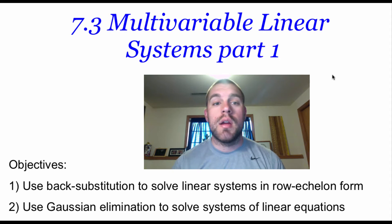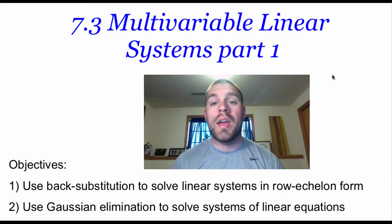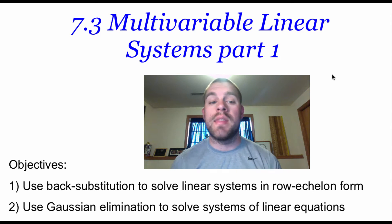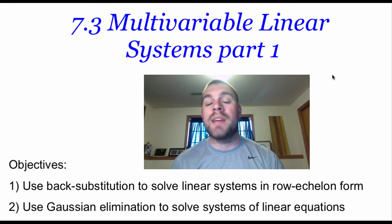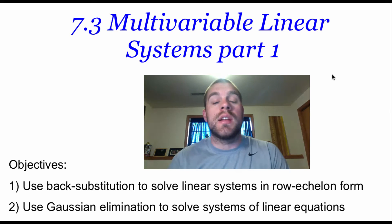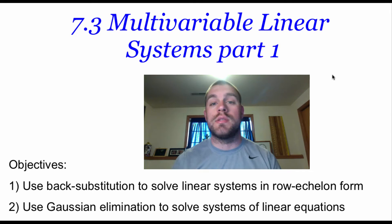Hey guys, Mr. Backerberg here. This is part one of Lesson 7.3. We are looking at multivariable linear systems — systems of equations that have two or more variables in them. Two objectives for this video: we're going to use back substitution to solve linear systems that are in row echelon form, and we are going to use Gaussian elimination to solve systems of linear equations.